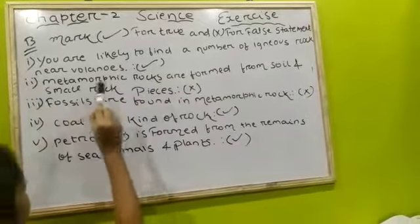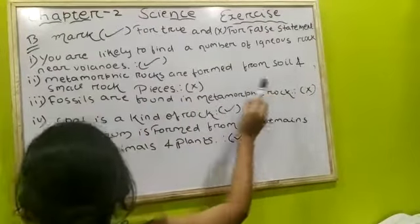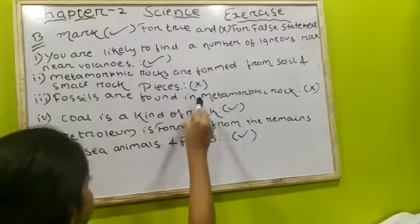Second number, metamorphic rocks are formed from soil and small rock pieces. The answer is false.